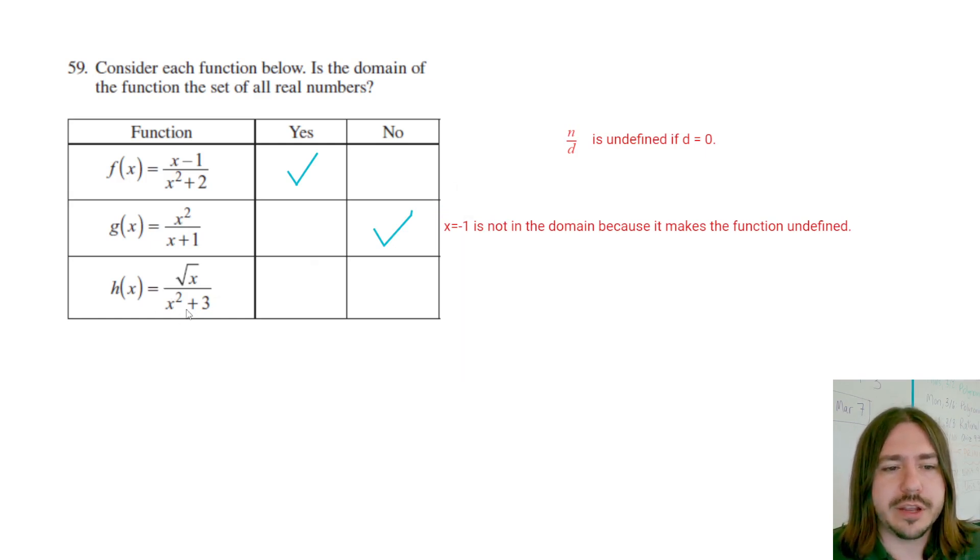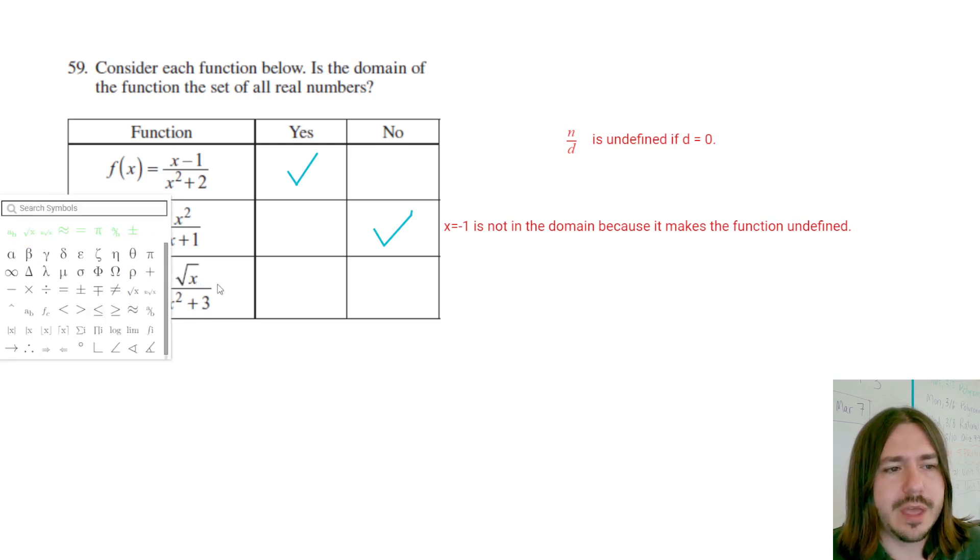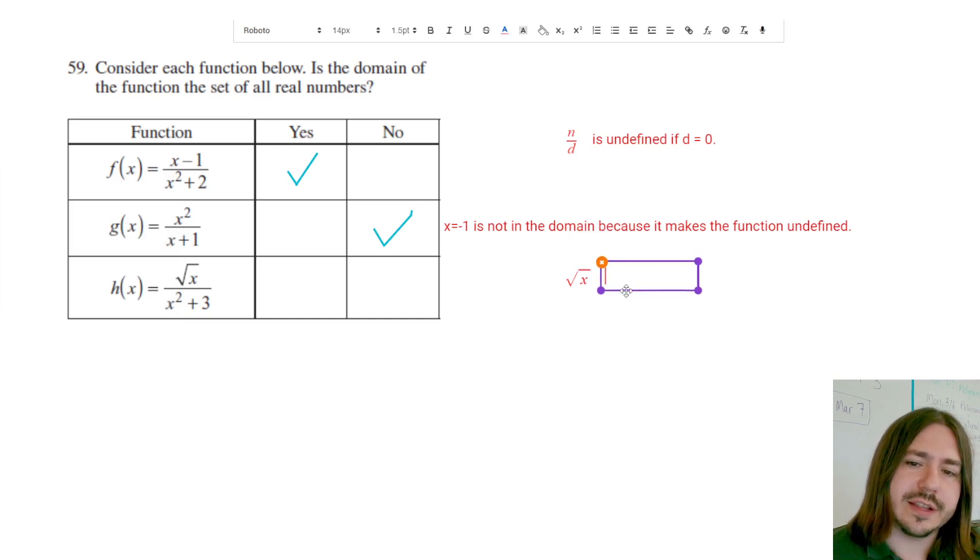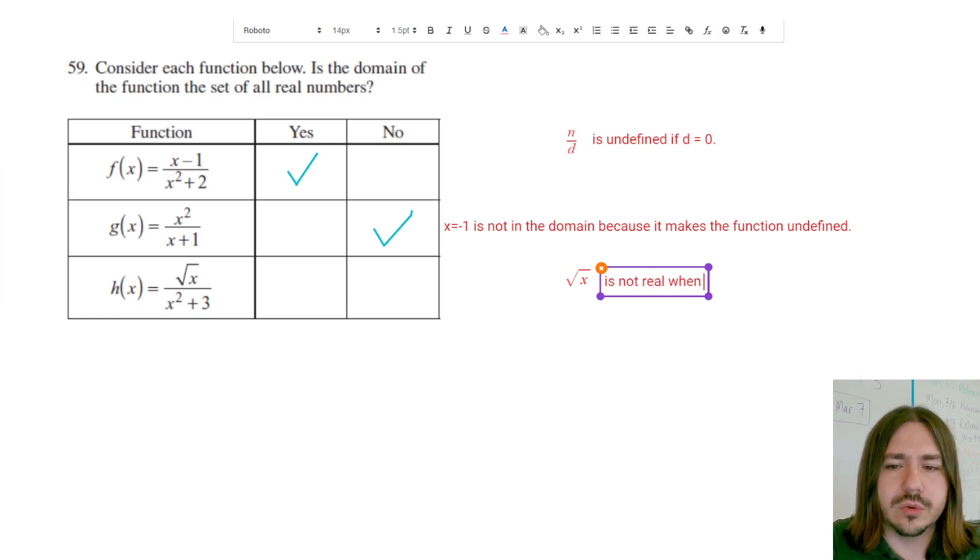So there's no value that I could plug in here that would make this undefined as far as the denominator is concerned. But we do have this square root of x. Whenever you have the square root of a number, it is not real when x is less than zero - in other words, when x is negative.